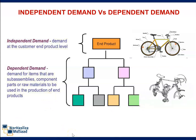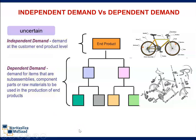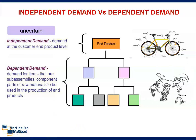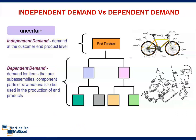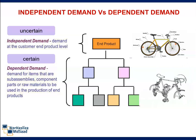For example, a complete bicycle is the end product, but the components of a bicycle such as the tire, pedal, and brake are Dependent Demand. The Independent Demand is uncertain, and the Dependent Demand is certain.